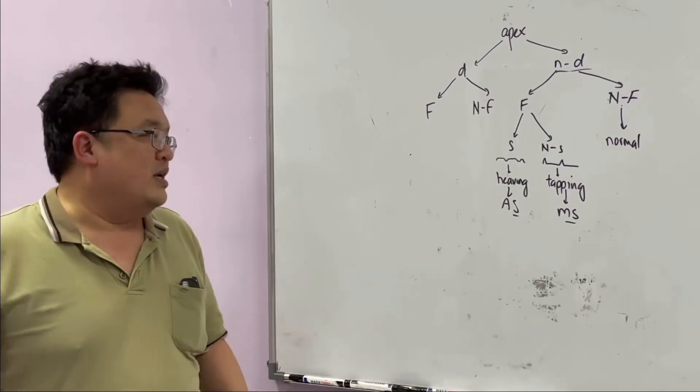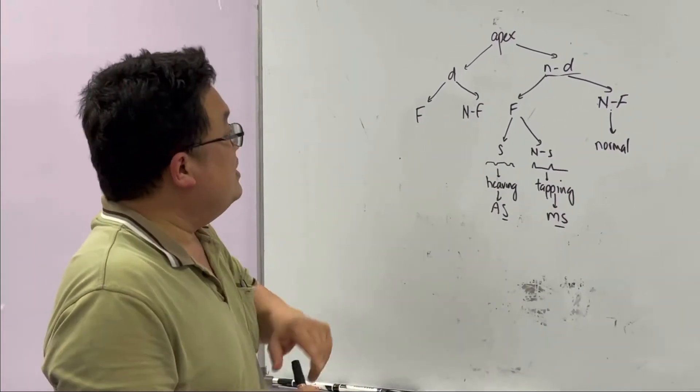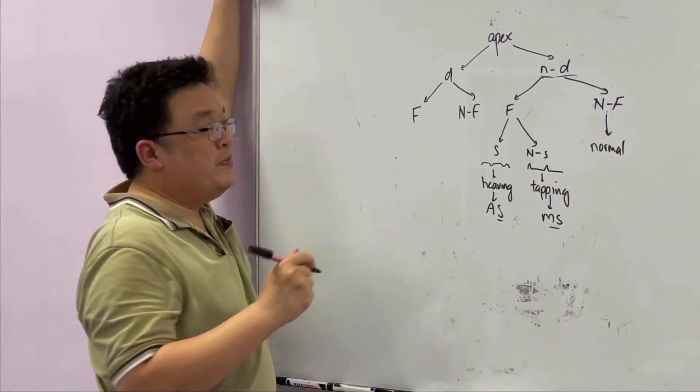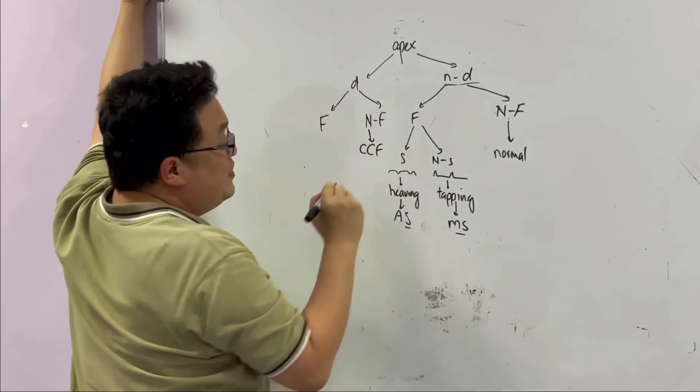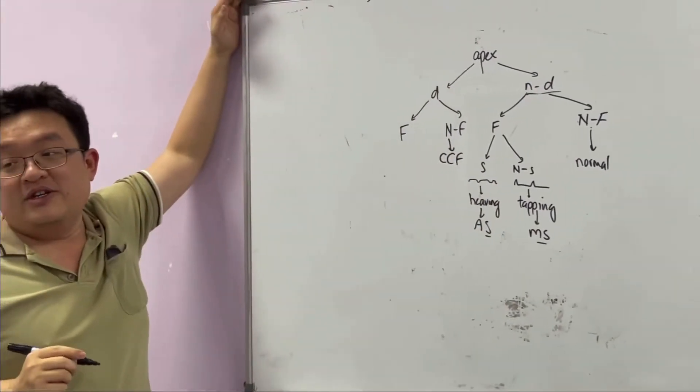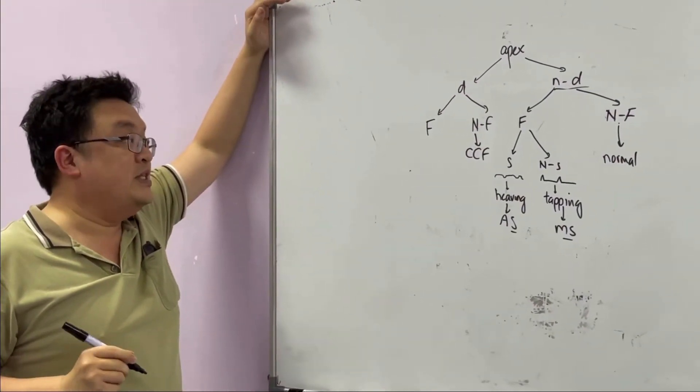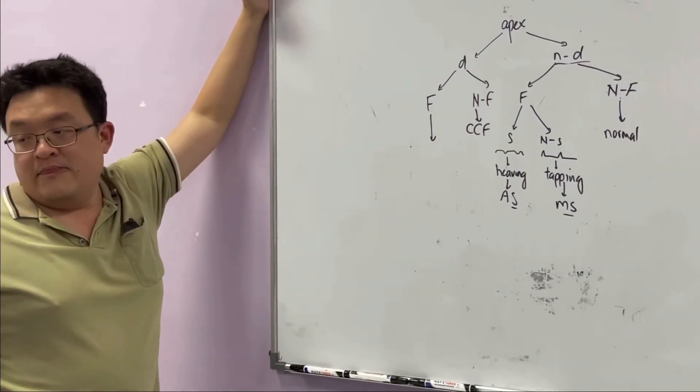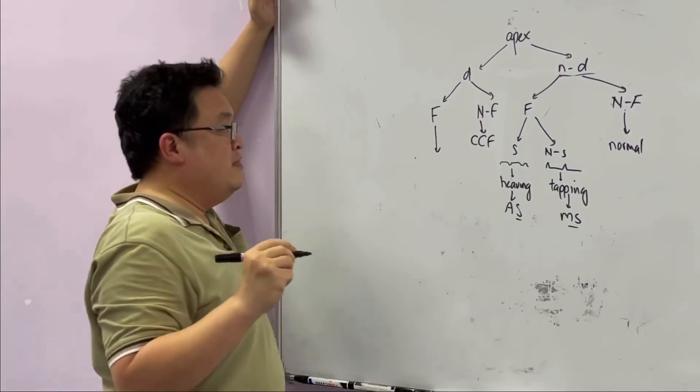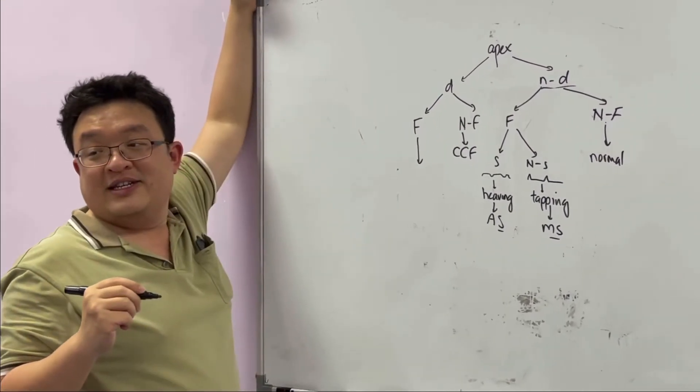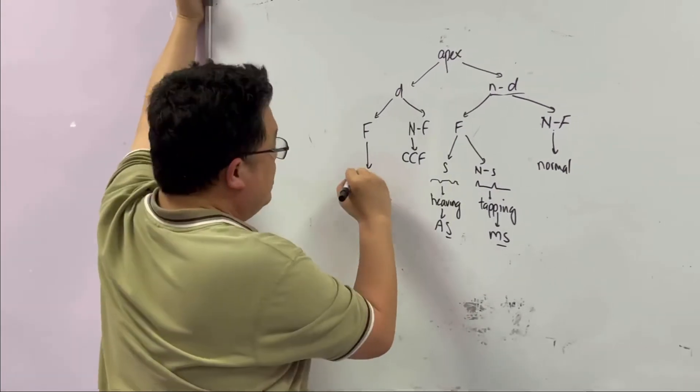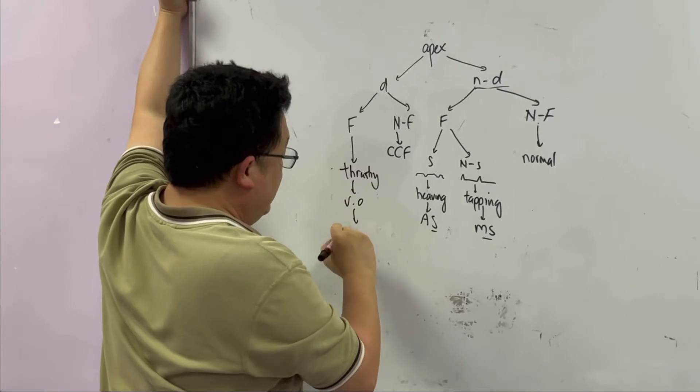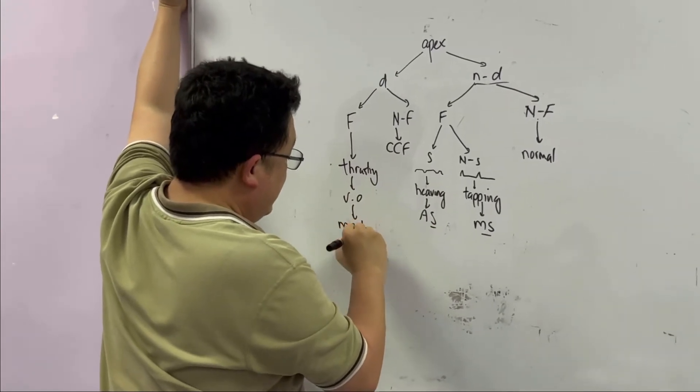If it is displaced and not forceful, this is your thrusting apex beat, which is a sign of volume overload, which you'll see in MR and AR. Regurgitation, regurgitation displaced.